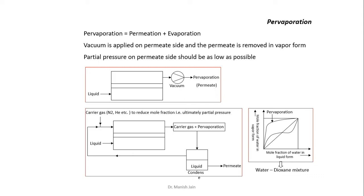Basically, in the pervaporation process, the separation occurs in three different stages. First, the different species present in the feed are absorbed at the surface of the membrane. Then these absorbed species diffuse across the membrane due to the concentration difference. Then they desorb at the other side of the membrane in vapor form.